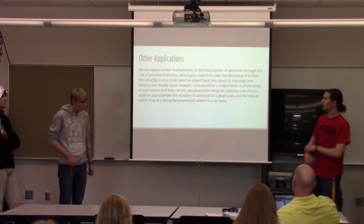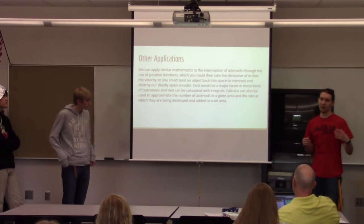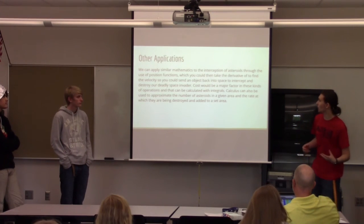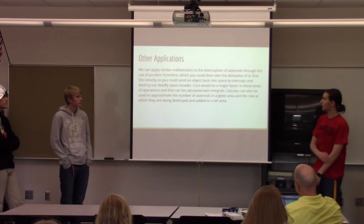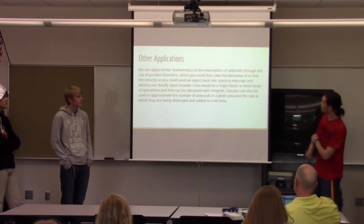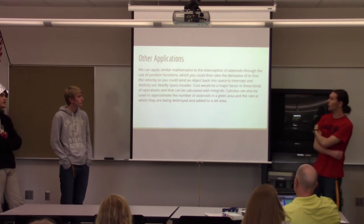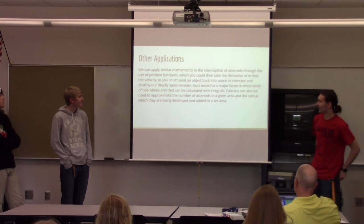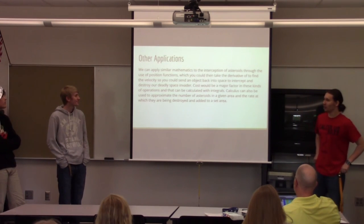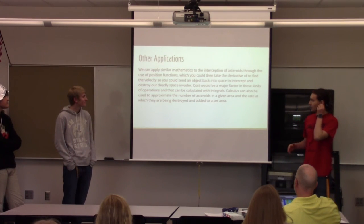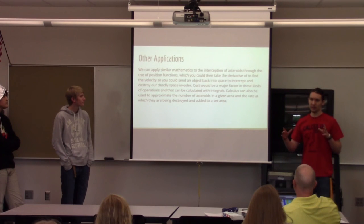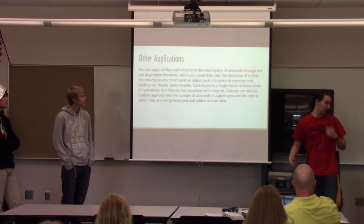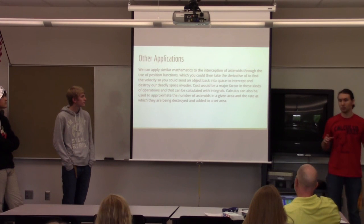Some of the other applications we can apply to this include intercepting asteroids orbiting the sun with our own satellites for either research purposes or mining them. You can take the derivative of the velocity to try to find where it would intercept. There are already aliens orbiting, so... It can also be used to approximate the number of asteroids in a given area, and at the rate that they're being mined or excavated, you can figure out how many will be left after a specific range of time.